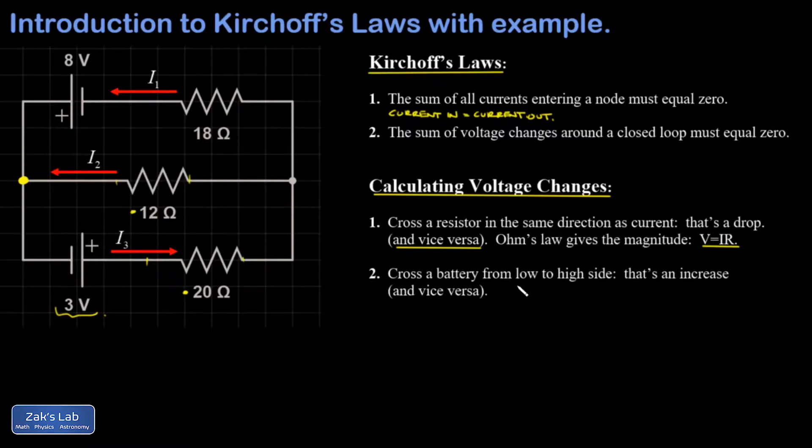And the second point here, if you cross a battery from the low to the high side, so if I look at the three volt battery, if I did this while I was traversing a loop, that would be an increase of three volts. If I went the other way, it would be a decrease.